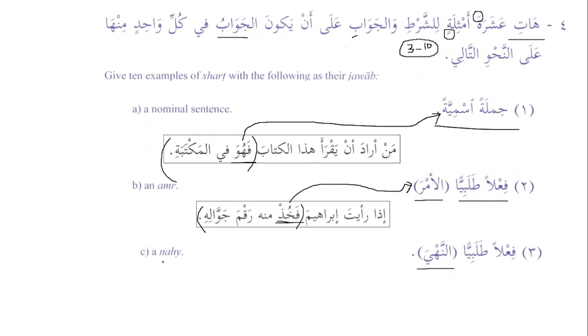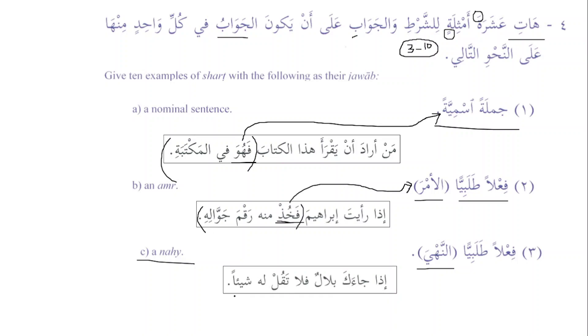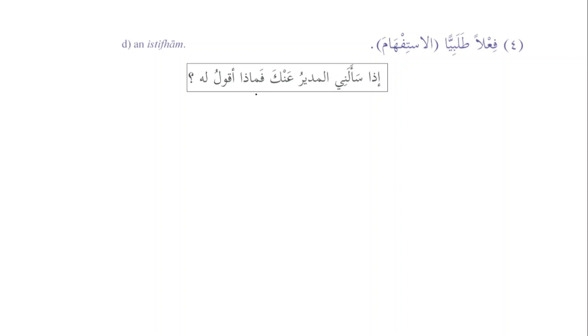If Bilal comes to you, don't say anything to him — the jawab al-shart is nahi: 'la taqul.' The verb is majzoom here. Then for fa'il talibi al-istifham, the jawab al-shart should be a question: 'Idha sa'alani al-mudiru 'anka, fa-maadha aqulu lah' — if the manager asks me about you, what should I tell him? Maadha is a question and fa is added because whenever jawab al-shart is jumla talbiyya — amr, nahi, or istifham — fa will be added.